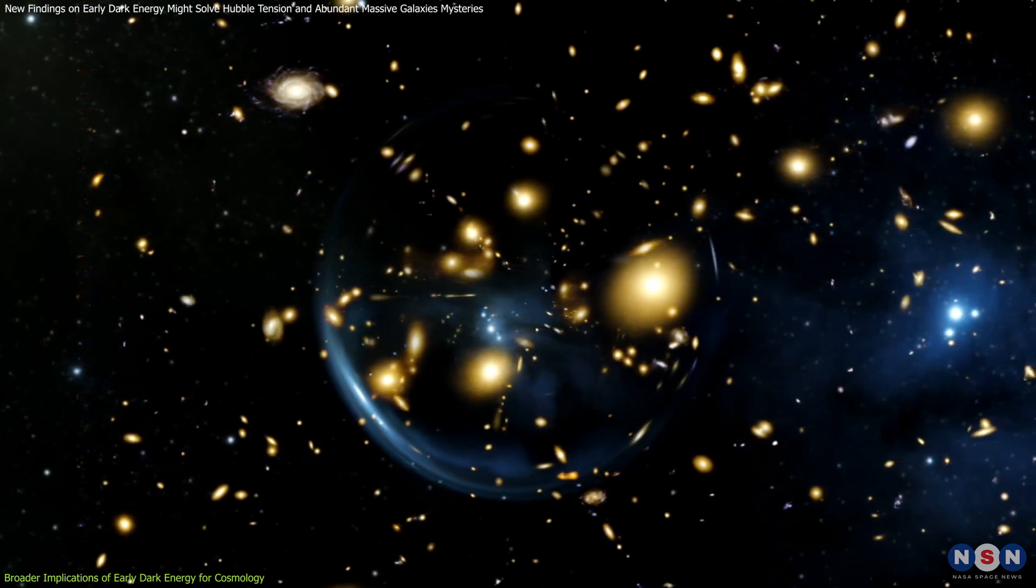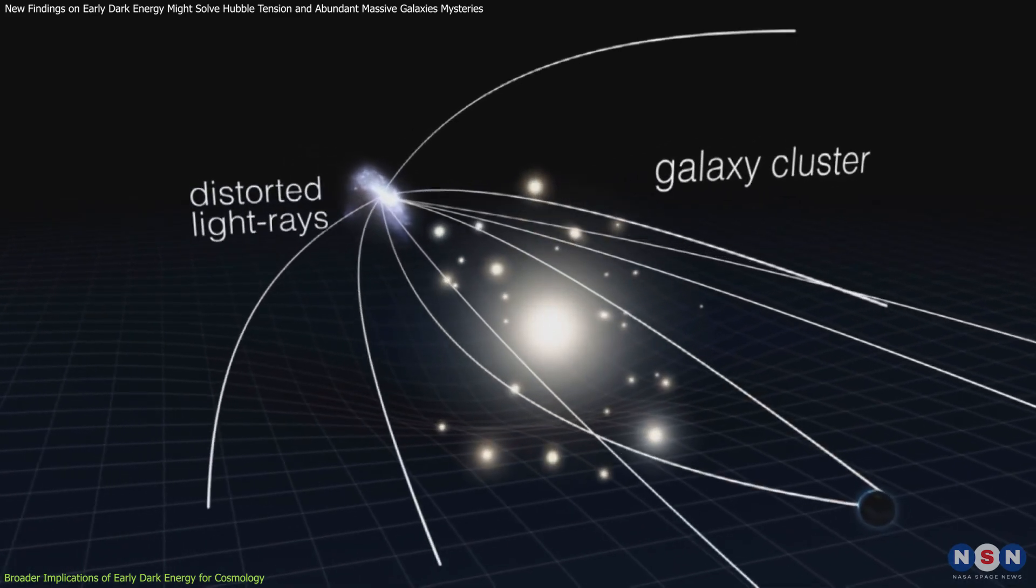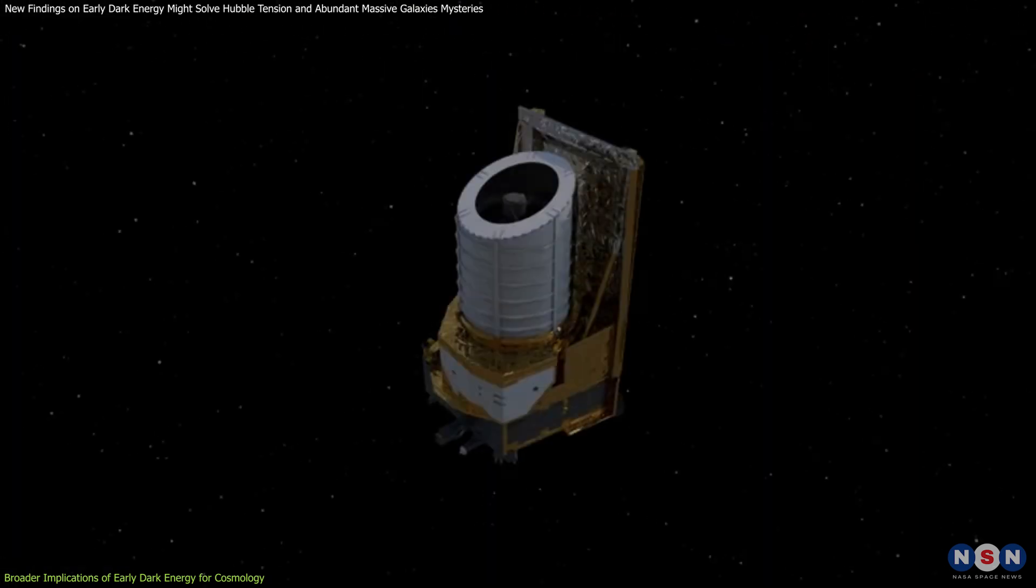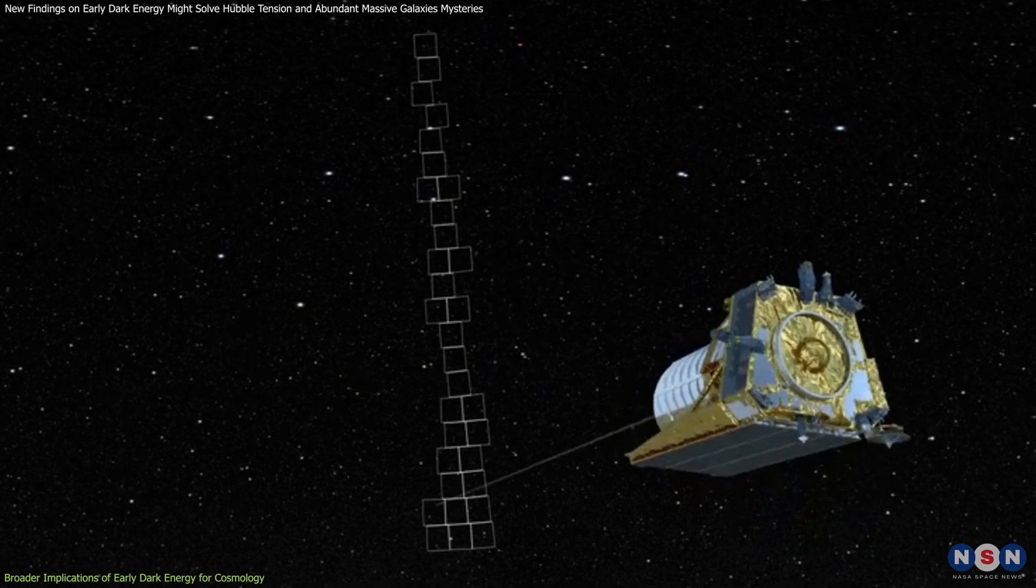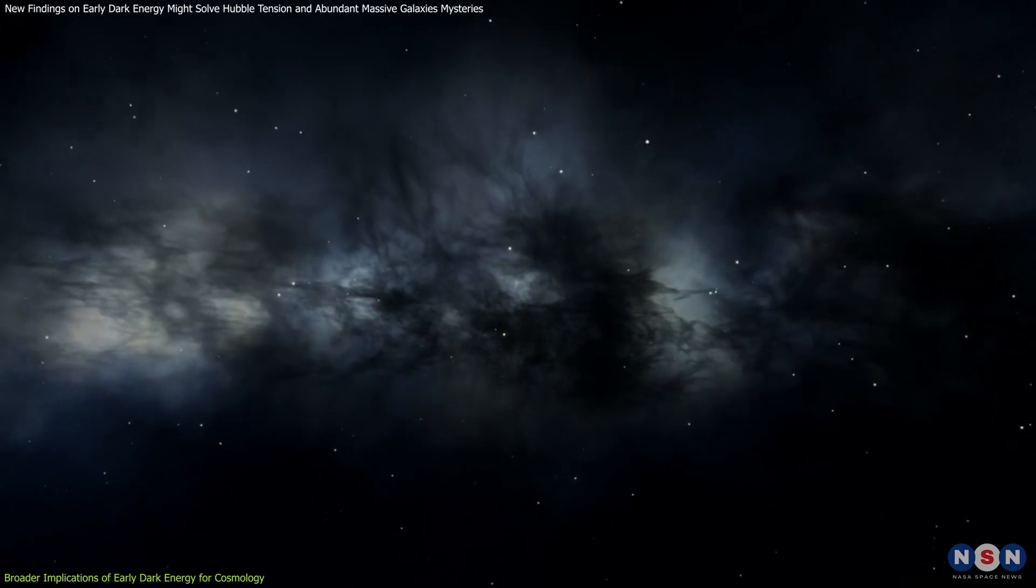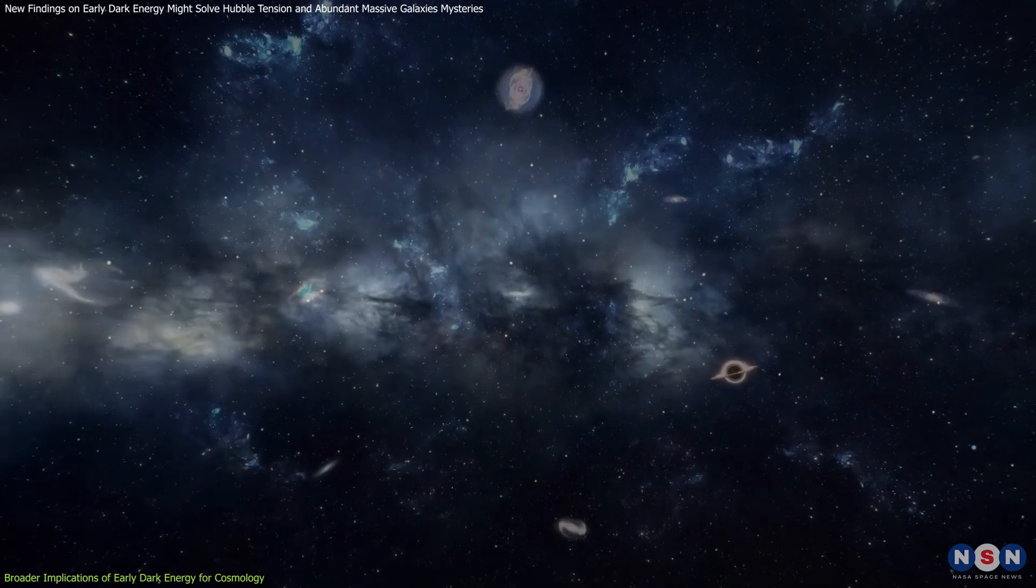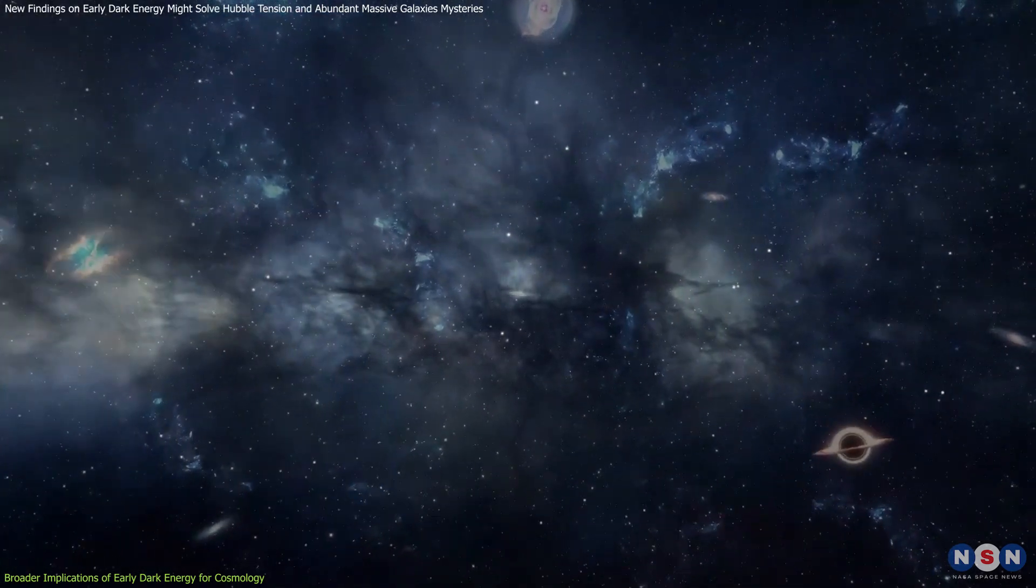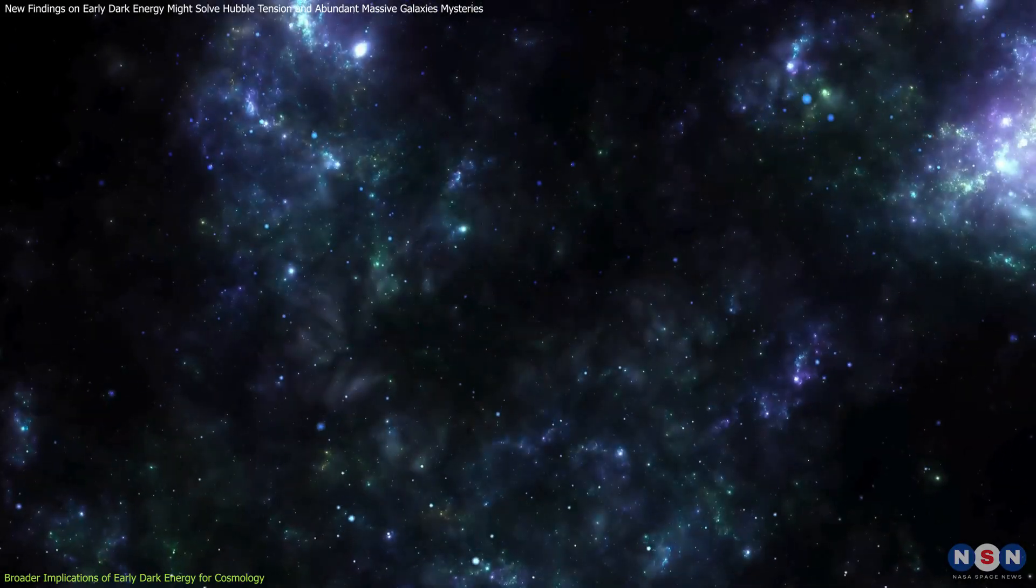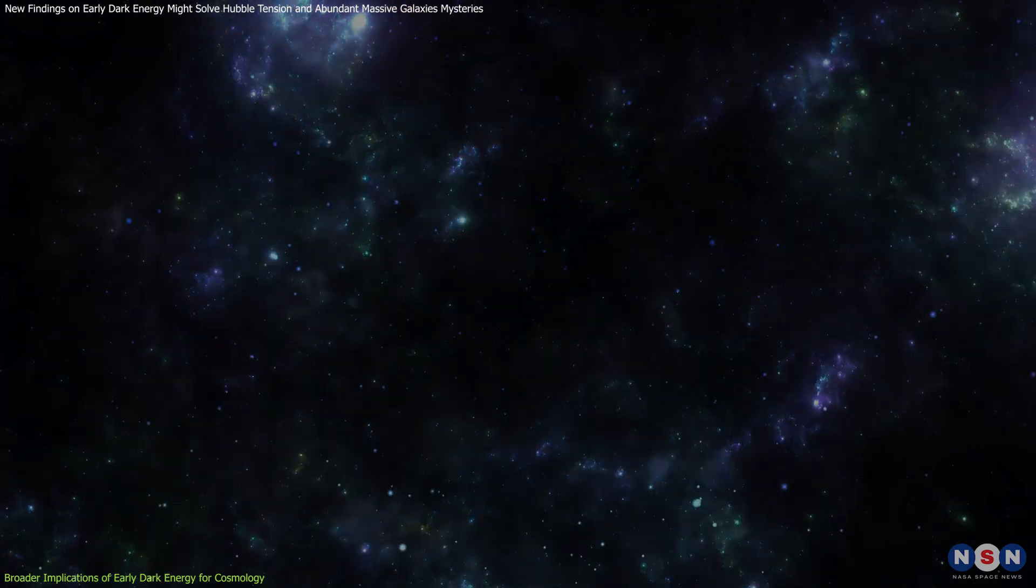Moreover, any unusual gravitational lensing effects, where light from distant galaxies is bent by massive objects, could reveal discrepancies pointing to early dark energy. What makes these missions exciting is their potential to either confirm or rule out early dark energy as a real phenomenon. If they find evidence consistent with early dark energy models, it would solidify this idea as a key component of our understanding of the universe. Conversely, if they don't, it would push scientists to look for alternative explanations, further advancing our knowledge of cosmic evolution.